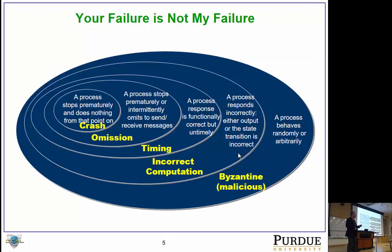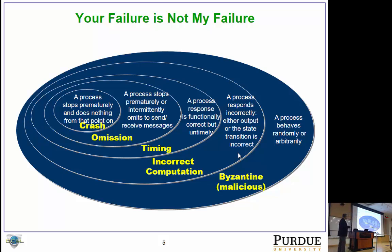Abstraction is key to this concept. Your failure is not my failure — different kinds of failures must be dealt with. In this concentric circle model, the most constrained set of failures are also easier to detect and deal with, and as you move outward you get more unconstrained failures. The most constrained would be crash failures: when your system or component fails, it stays silent and does not respond to any queries.